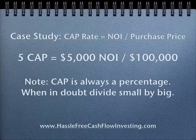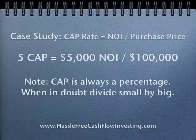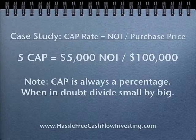Let's look at a case study. Assuming you have $5,000 a year of net operating income and a $100,000 property, the cap rate would be a 5 cap. Note that it is really 5%, but in the industry people don't say a 5% cap rate — in the lingo, they say it's a 5 cap. If you're ever in doubt, divide the small number by the big number. If you divided $100,000 by $5,000, that would give you a huge number, and it's highly improbable that that would be your cap rate.